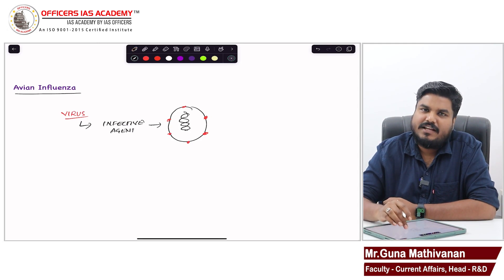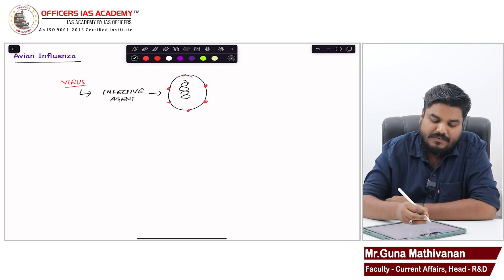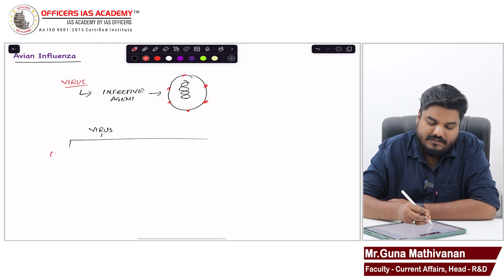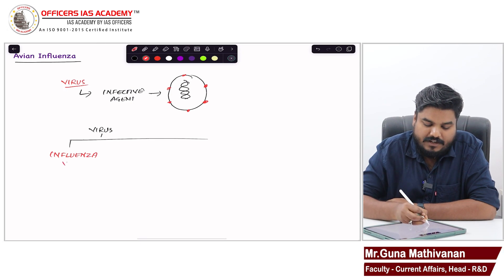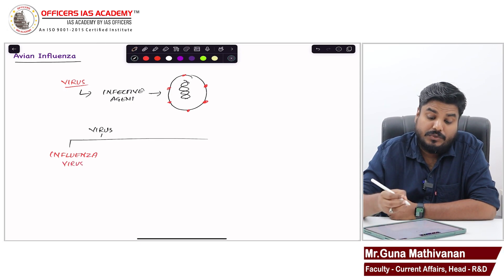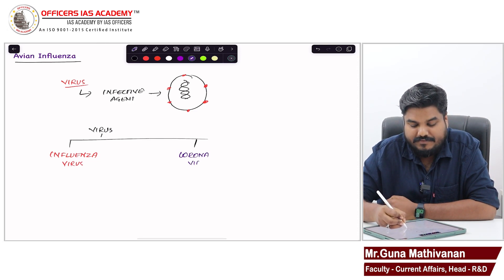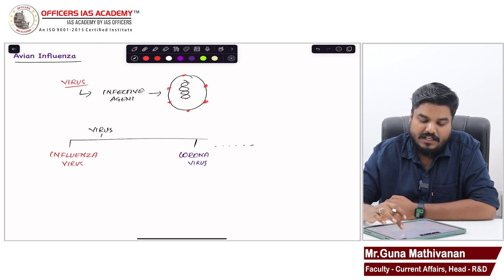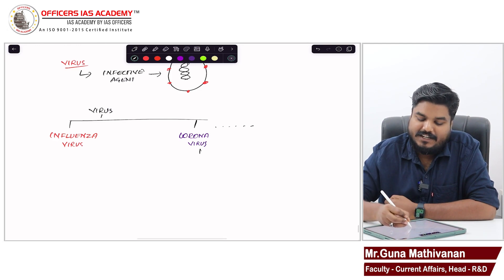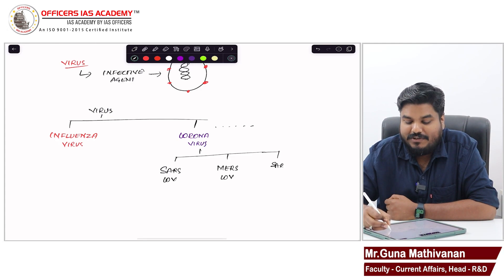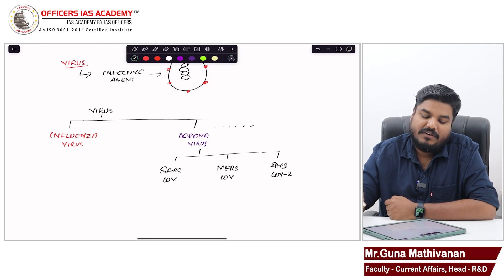Now, it is of multiple types. Virus can be divided into influenza virus, coronavirus, and there are other types as well. This coronavirus can be further divided into many. For example, we have SARS coronavirus, MERS coronavirus, and the 2019 SARS-CoV-2. These are different types of coronavirus.